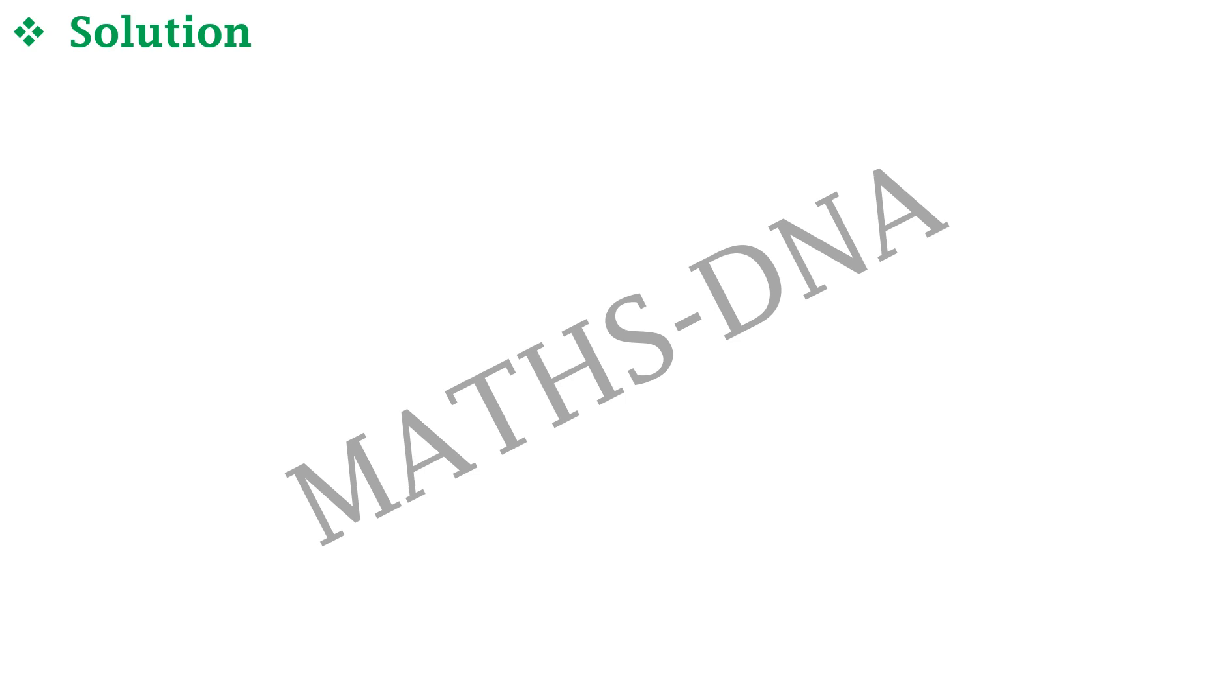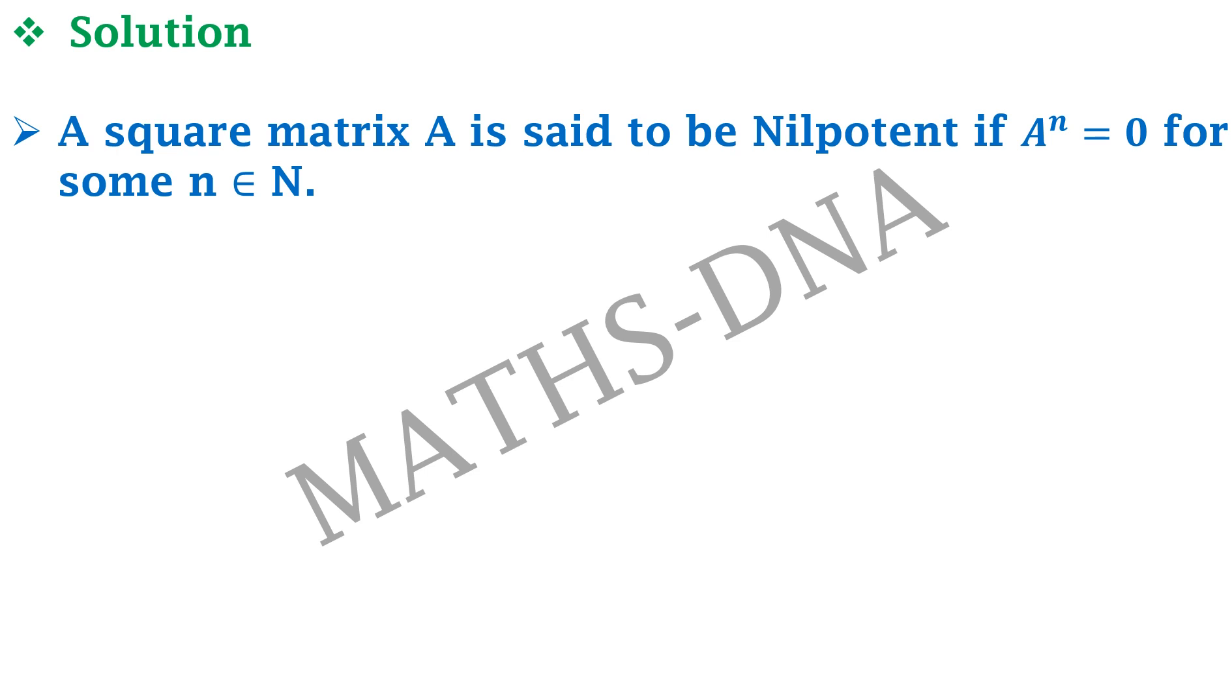What do we mean by a nilpotent matrix? A square matrix A is said to be nilpotent if A raised to n equals 0 for some n belongs to N, that is the set of natural numbers. Here, small n is the index of nilpotent matrix.